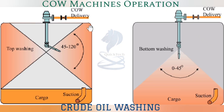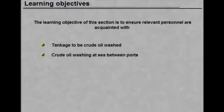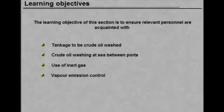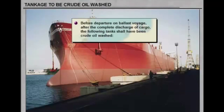The learning objectives of this section include the operation and use of inert gas, ensuring relevant personnel are acquainted with tankage to be crude oil washed, crude oil washing at sea between ports, use of inert gas, vapor emission control, precautions against electrostatic generation, and discharge of dirty ballast.